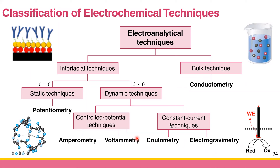The most interesting class, which I love, is the control potential techniques. With constant current we apply a constant current; with control potential we control the potential and the current is not going to be constant. The techniques that fall into this category are amperometry and voltammetry. Note that coulometry and electrogravimetry can be both constant current and controlled potential — that's why there is a connecting line — while amperometry and voltammetry are strictly control potential techniques.